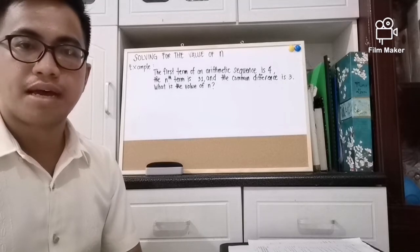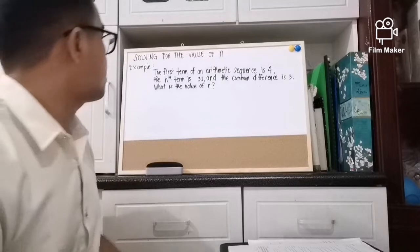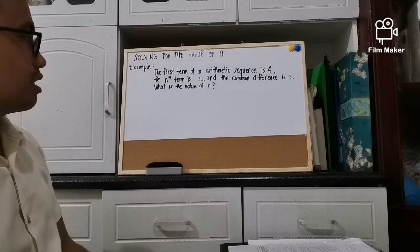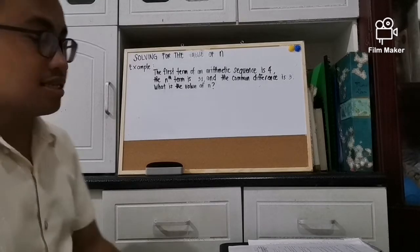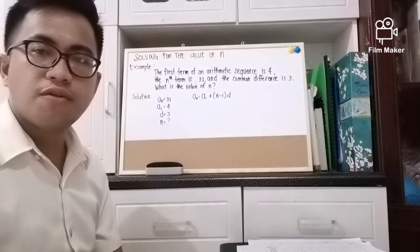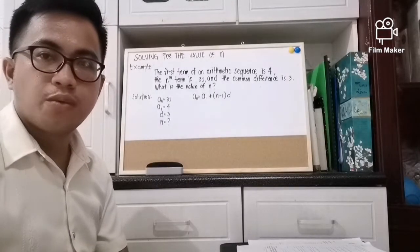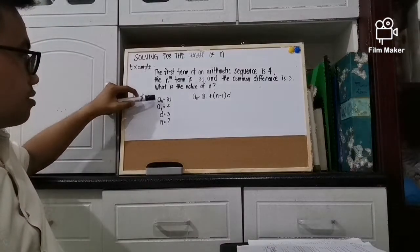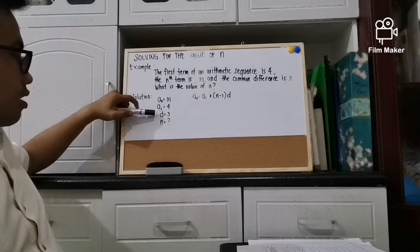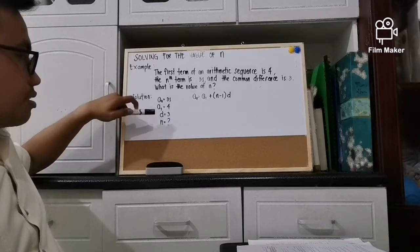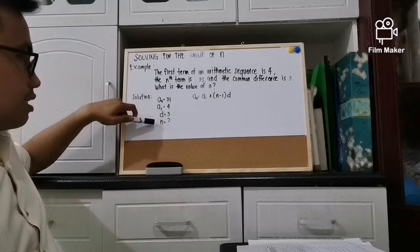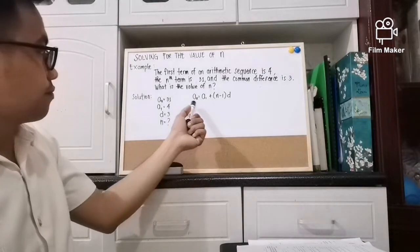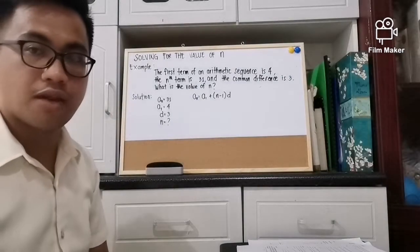If you are asked to solve for the number of terms, or the value of n, we can apply the same process. Example: the first term of an arithmetic sequence is 4, the nth term is 31, and the common difference is 3 — what is the value of n? First, write the given: nth term is 31, first term is 4, common difference is 3, and n is unknown. We still use the same formula and substitute the given.